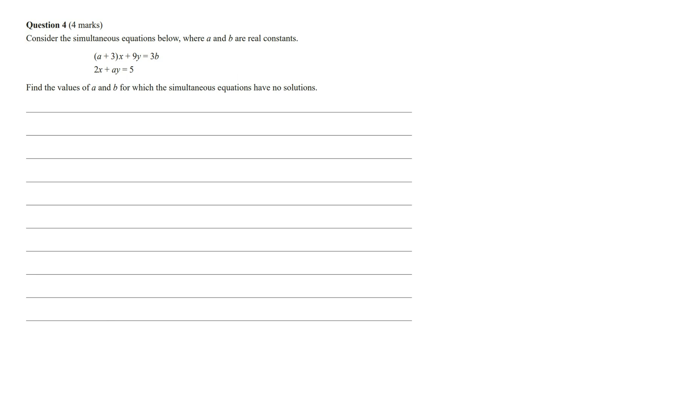Whenever you're approaching these types of questions, the first thing you want to do is rewrite the equations to make Y the subject. And so doing this, for the first equation, we're going to get Y is equal to 3B minus A plus 3 times X, and then we're going to divide by 9, and we want to write this in separate fractions.